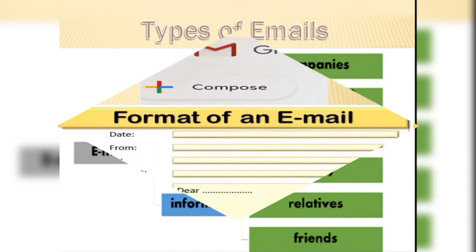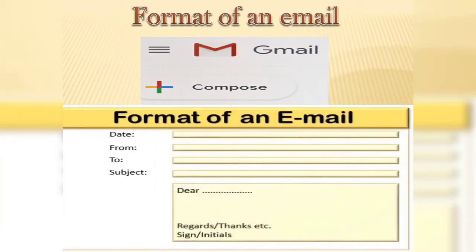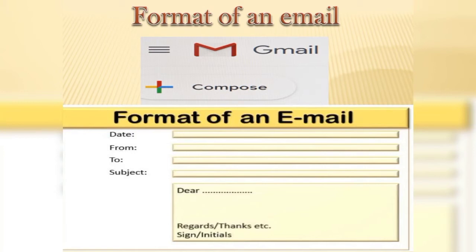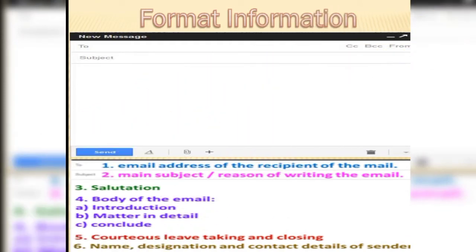Now let us understand how we write an email. What is the format for writing an email, or its structure? An email is divided into two parts. The first part contains information like the date, sender's email, receiver's email, and the subject. Apart from that, we also have the body of the mail, which contains the message and the closing part. It can be a formal message or an informal message.